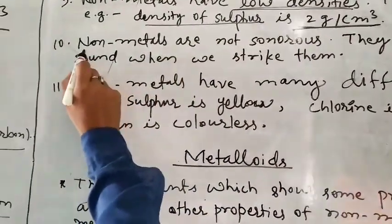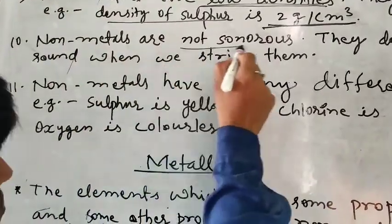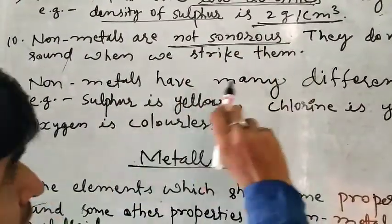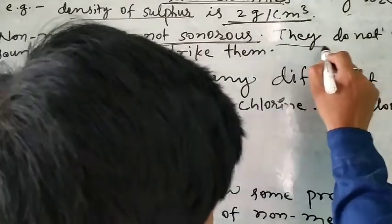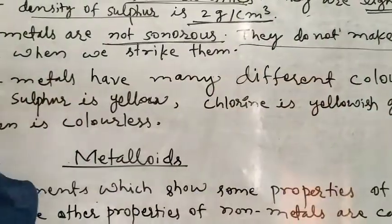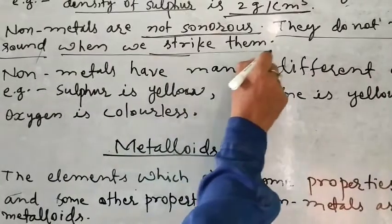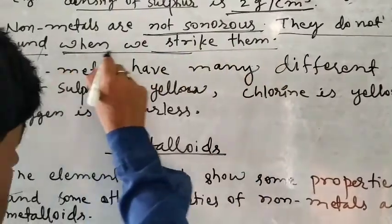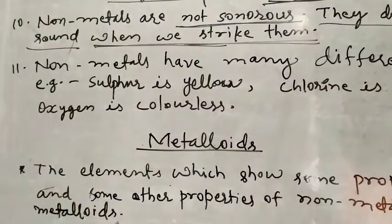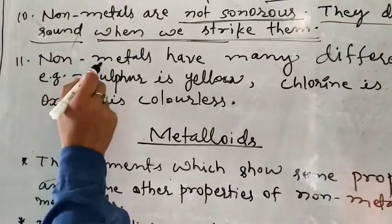The next property is that non-metals are not sonorous. That means they do not make a ringing sound when we strike them with a hammer or another object.